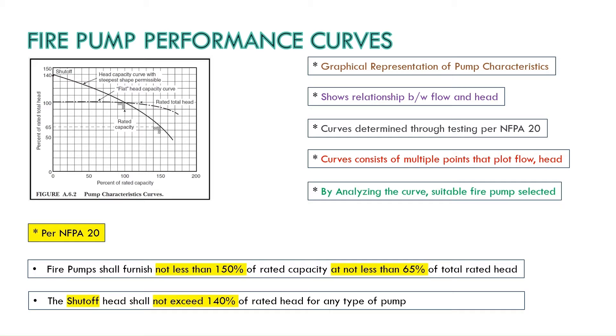I will explain you this one by just considering one small fire pump. Here we have 1000 GPM fire pump at 100 PSI. This is the rated capacity and 100 PSI is the total rated head. Now this pump shall produce 150% of the rated capacity at or at least 65% of total rated head. So in our case when we have 1000 GPM at 100 PSI then 150% of 1000 will be 1500 GPM and we need to get at least 65% of this 100 PSI. So it will be about 65 PSI.